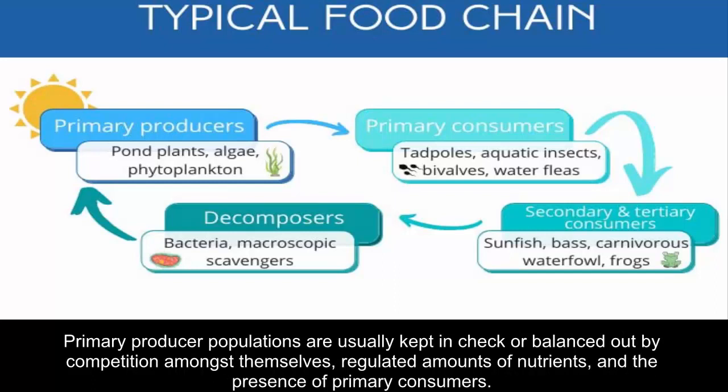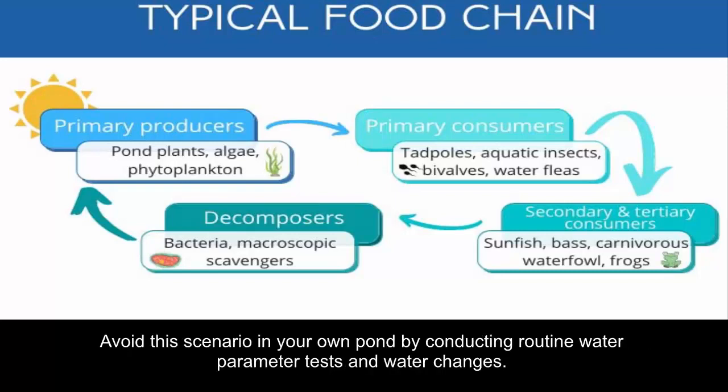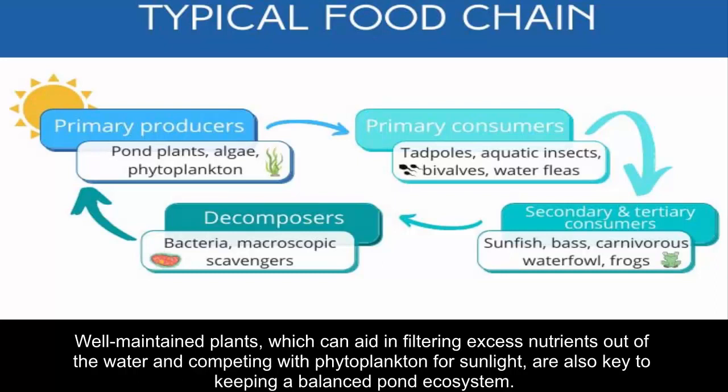Primary producer populations are usually kept in check by competition amongst themselves, regulated amounts of nutrients, and the presence of primary consumers. A typical example of imbalanced productivity is the occurrence of harmful algal blooms. Avoid this scenario in your own pond by conducting routine water parameter tests and water changes.